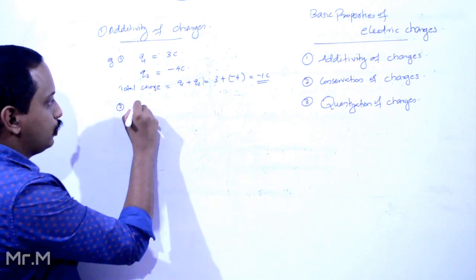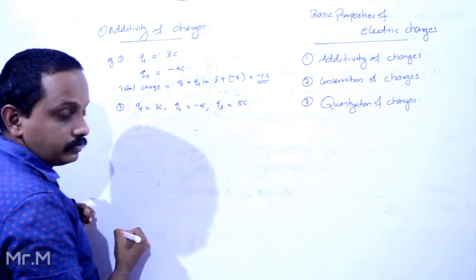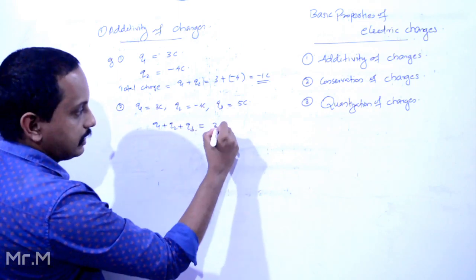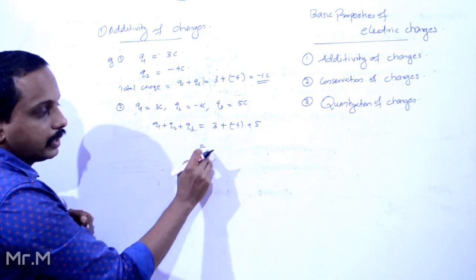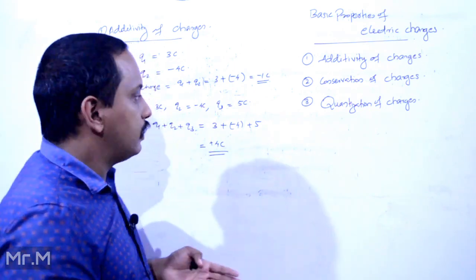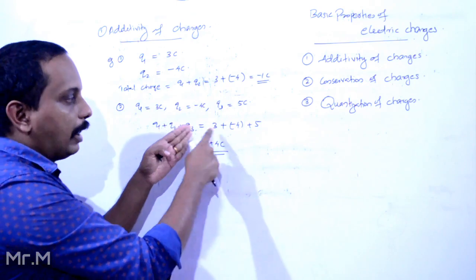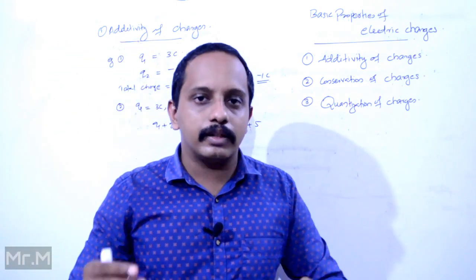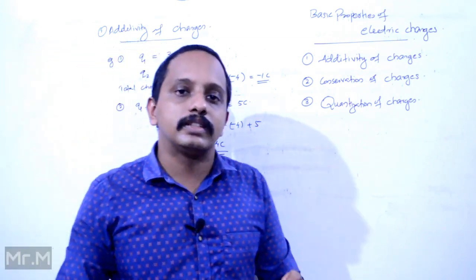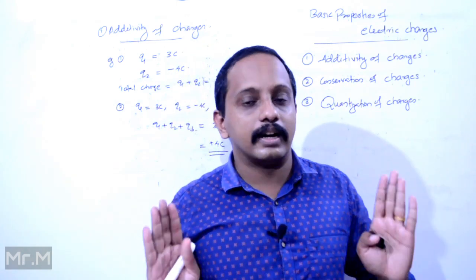Example 2: Q1 is equal to 3, Q2 is equal to minus 4, Q3 is equal to 5. Q1 plus Q2 plus Q3 is equal to 3 plus minus 4 plus 5. Now, 3 plus minus 4 is equal to minus 1. So minus 1 plus 5 is equal to 4. If we consider the plus or minus, we can add algebraically and get the total charge. If there is n number of charges, the net charge is equal to Q1 plus Q2 plus Q3 plus Qn. That is the additivity of charges.